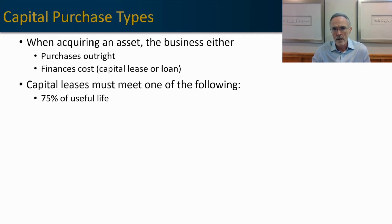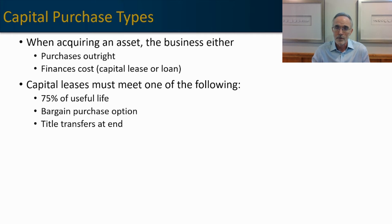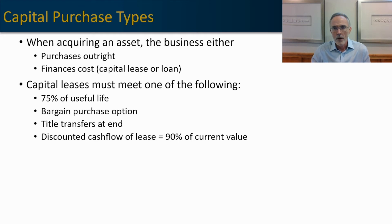The four capital lease criteria are: first, if 75% of the useful life is consumed under the lease term — for example, a four-year lease on a five-year asset qualifies. Second, if there is a bargain purchase price, such as a dollar buyout clause. Third, if title conveys to the lessee at the end of the lease term. Fourth, if the discounted cash flows of the lease equal 90% of the current value of the asset purchased.